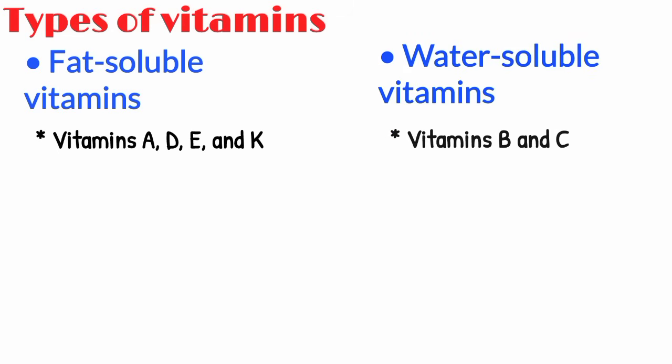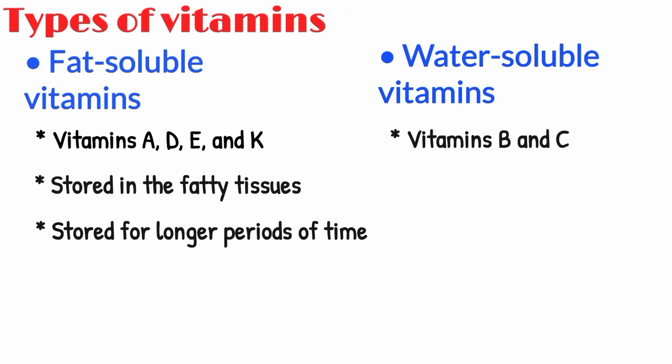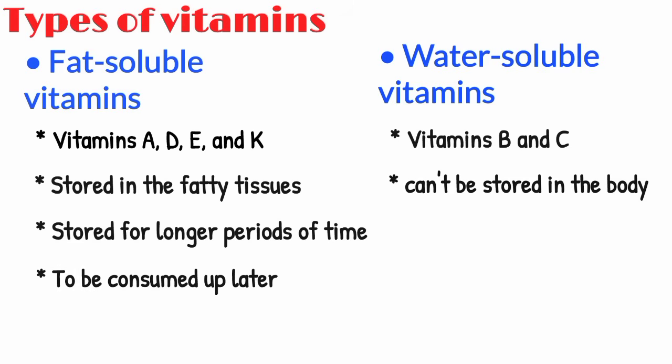As the names suggest, fat-soluble vitamins are stored in the fatty tissues and can be stored in the body for longer periods of time to be eventually consumed up later. While the water-soluble vitamins cannot be stored in the body as they are excreted out in the urine by the excretory system and need to be taken regularly.